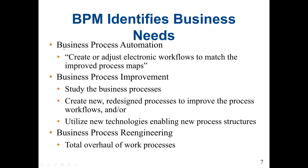Business process automation is to create or adjust electronic workflows to match the improved process maps. Business process improvement is to study the business process, then create new or redesign processes to improve workflow or utilize new technology to enable new process structures. Business process re-engineering is the total overhaul of work processes. We will cover this concept in future lectures.